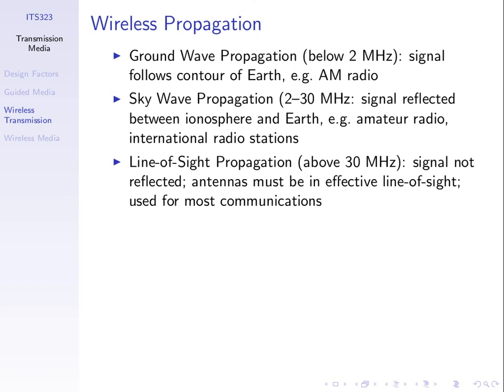Let's now look at how signals propagate through the air. We know they attenuate and get weaker across distance. How signals propagate depends upon the frequency that we use. We divide into three different types of propagation. If we're sending signals with frequencies below 2 megahertz, we talk about what's called ground wave propagation — the signal follows the contour of the earth.